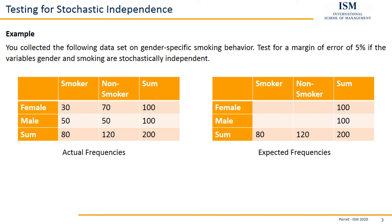For example, for female smokers: 80 times 100 divided by 200, giving us 40 — that's the first expected frequency. Similarly, for female non-smokers: 120 times 100 divided by 200. The same for male smokers: 80 times 100 divided by 200. And for male non-smokers: 120 times 100 divided by 200. Now we have the actual frequencies and expected frequencies.